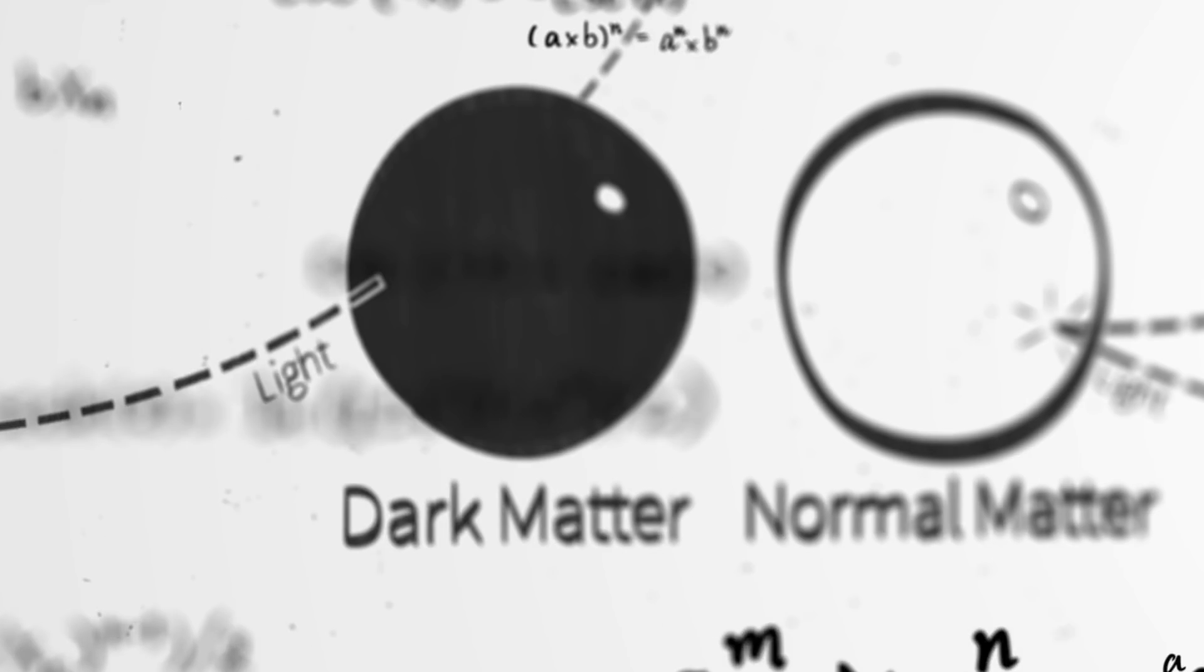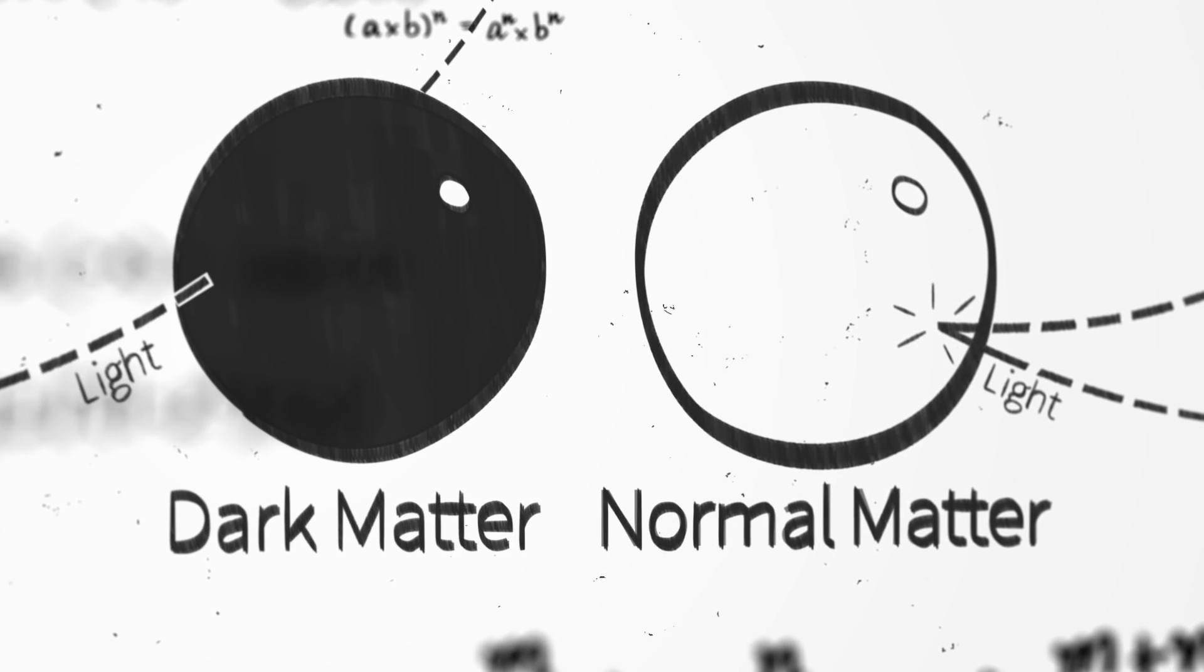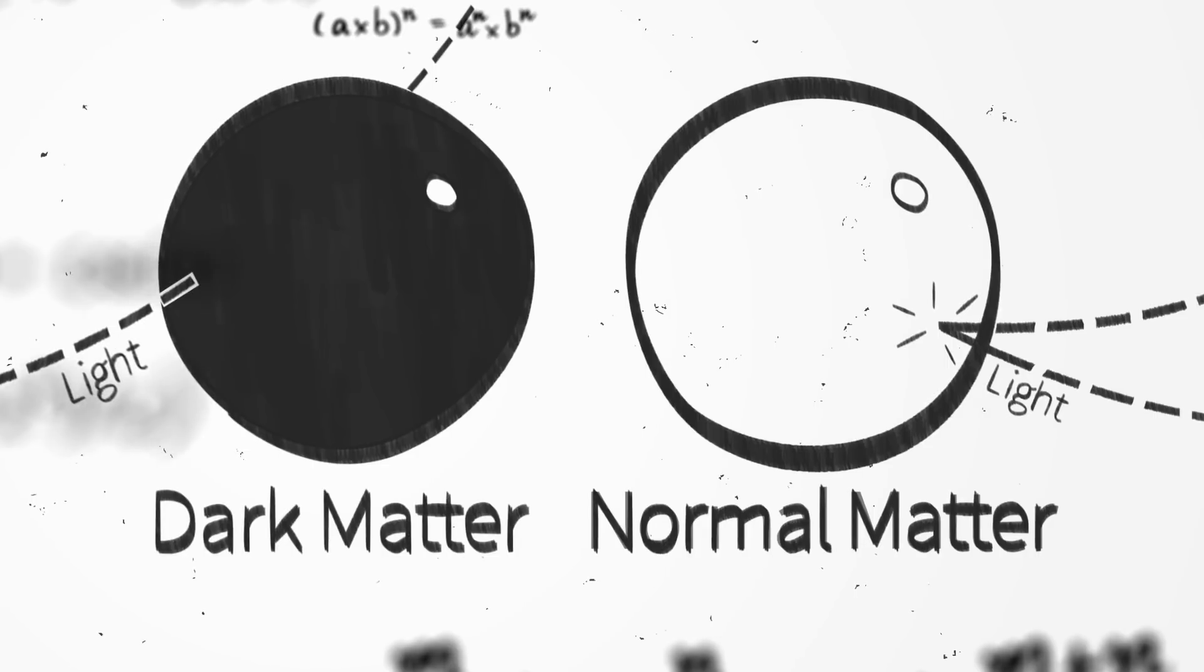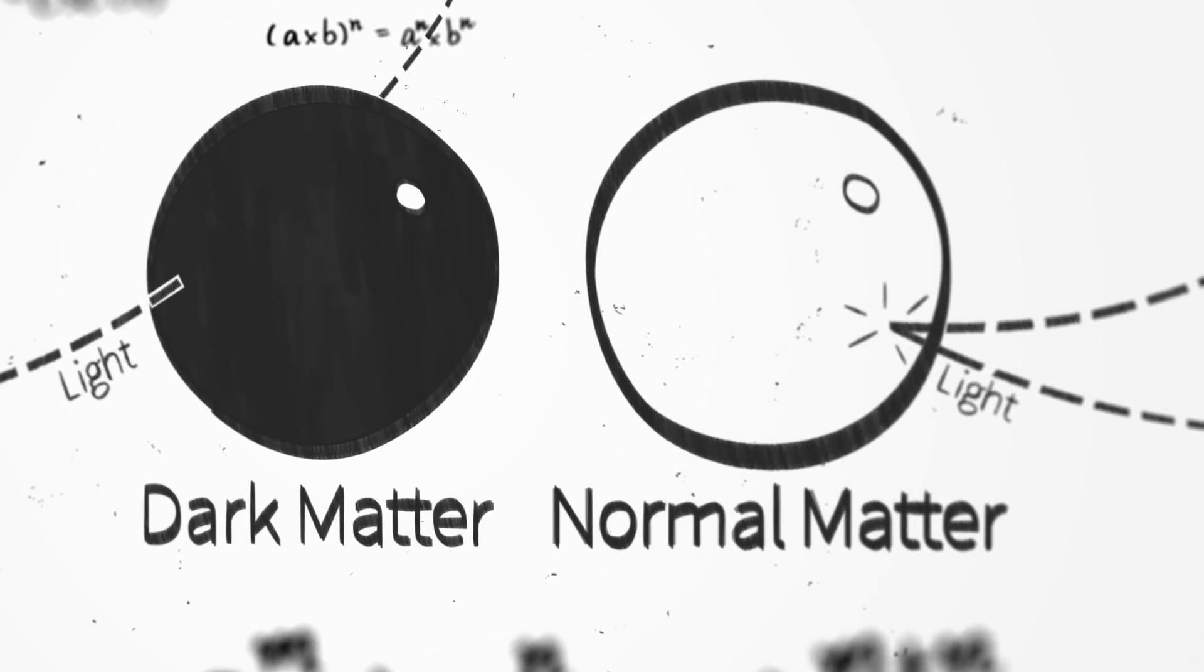The reason we don't know what it is, well, we can't see it. Unlike normal matter, this mysterious substance does not emit light and cannot be seen directly, which is why it's called dark matter.